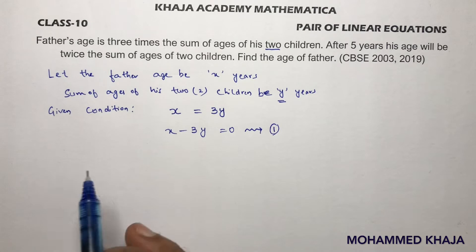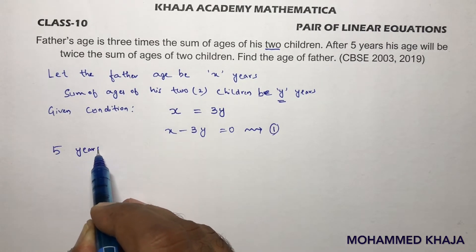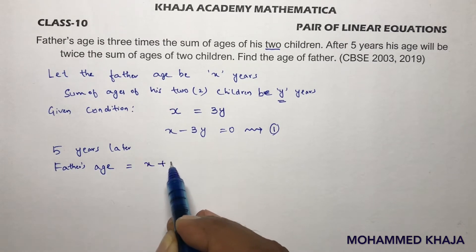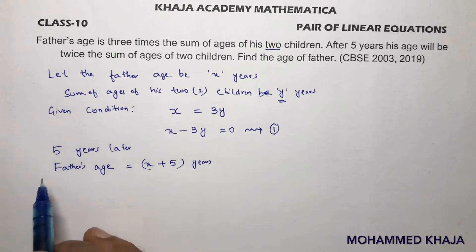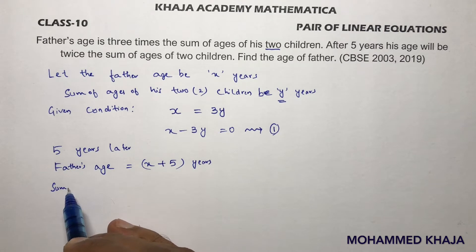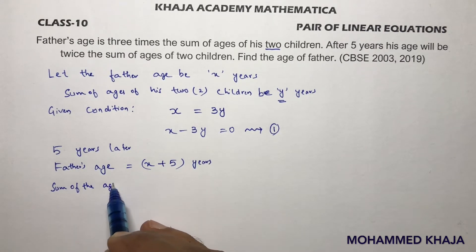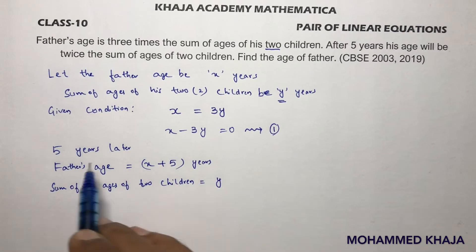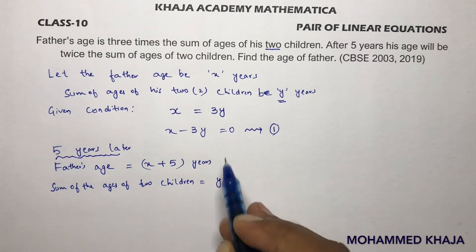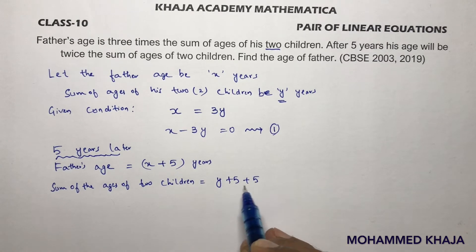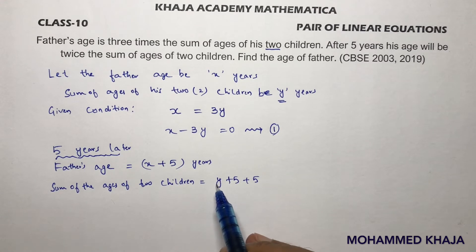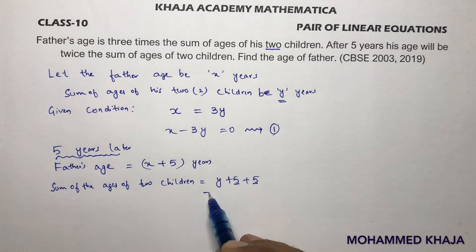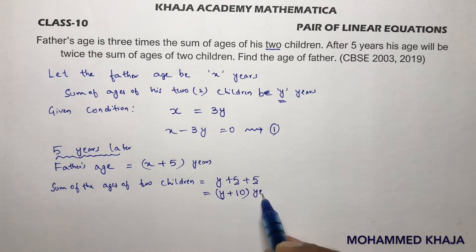The second equation: after five years, father's age will become x plus five. The sum of the ages of two children will become y plus five plus five, because five years later both children each gain five years. So the total sum of the children's ages becomes y plus ten years.